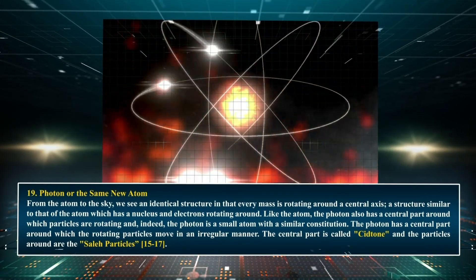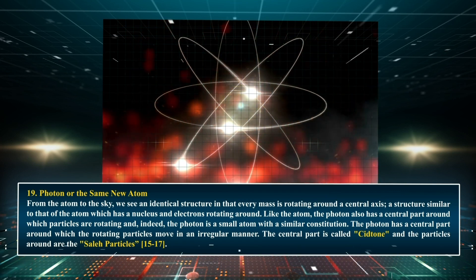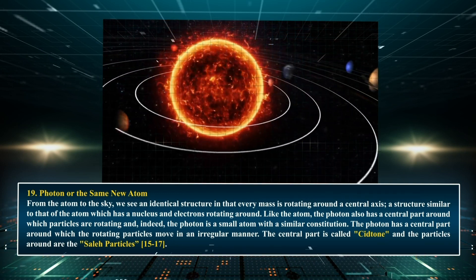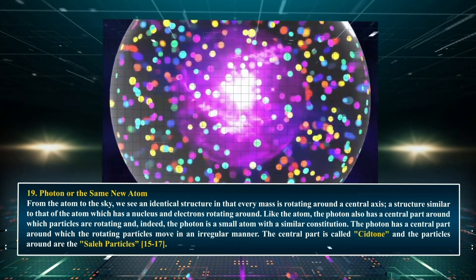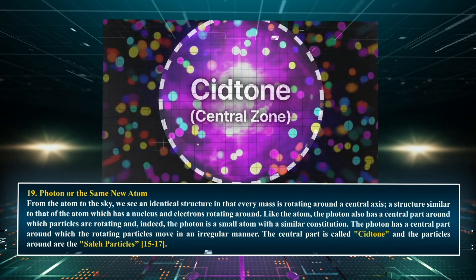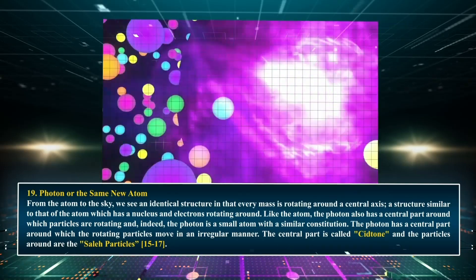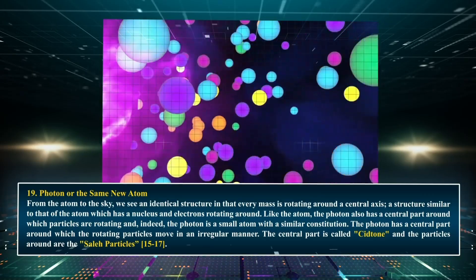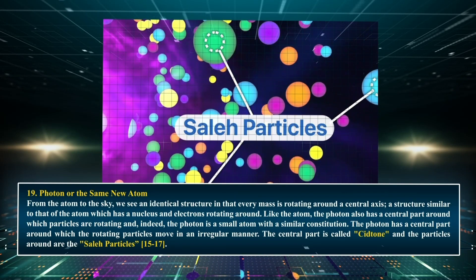Chapter 19: Photon or the same new atom. From the atom to the sky, we see an identical structure in which every mass is rotating around a central axis — a structure similar to that of the atom, which has a nucleus with electrons rotating around it. Like the atom, the photon also has a central part around which particles rotate. Indeed, the photon is a small atom with a similar constitution. The central part is called the citone, and the particles around it are the Saleh particles.